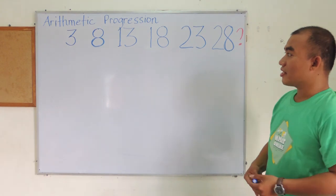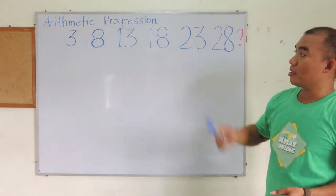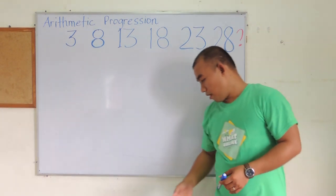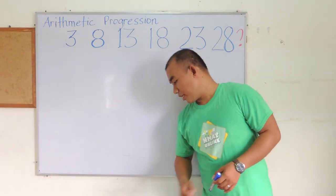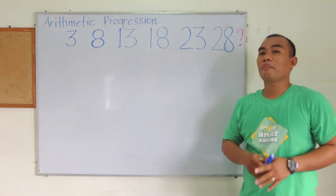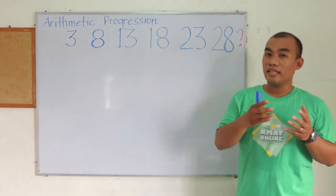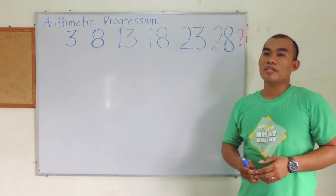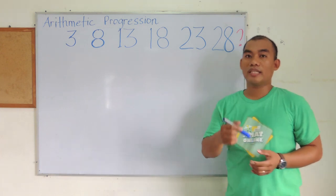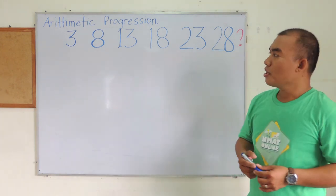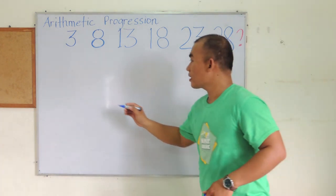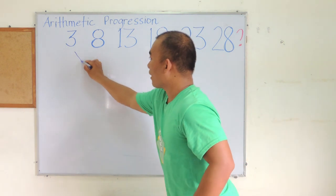One type of series is an arithmetic progression. In an arithmetic progression, the sequence varies from one term to another by adding or subtracting a common number, which is called the common difference. For example, from 3 to 8, the common difference is 5.